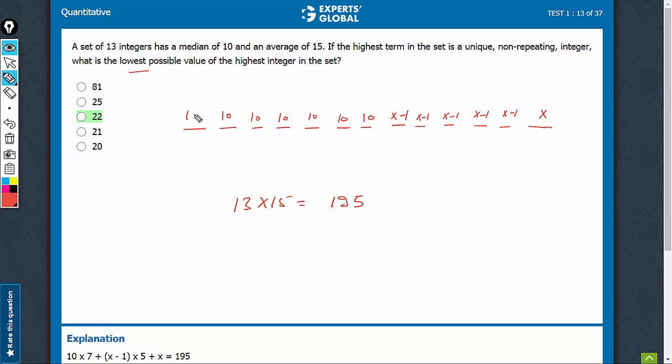And therefore, these all add up to 70. So 70 plus 5 terms, x minus 1 each, plus x, all add up to 195.